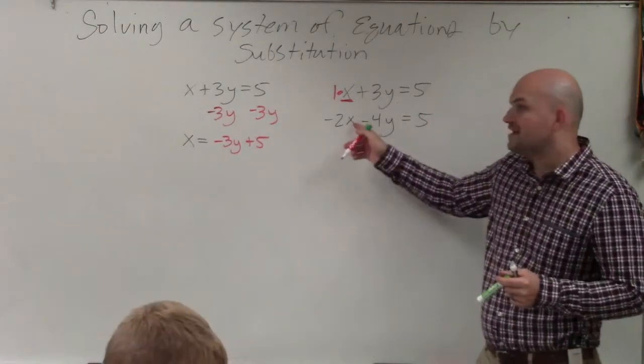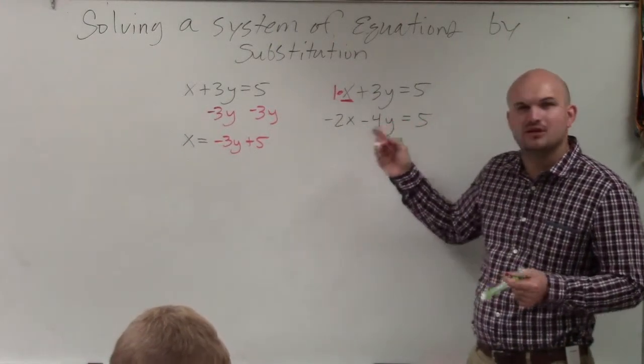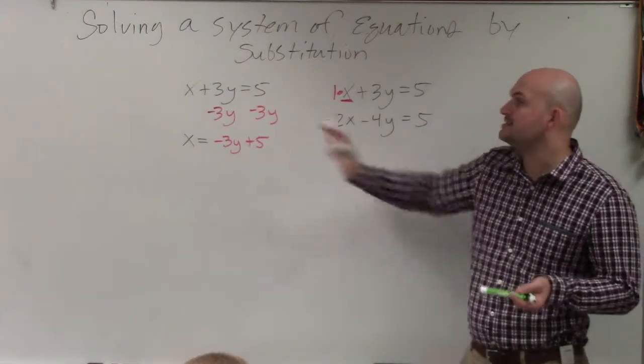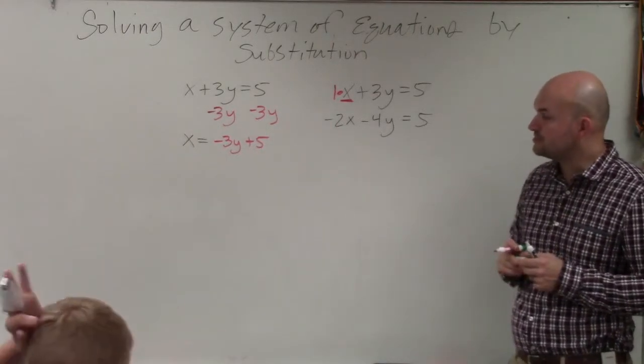OK? If you were to solve for x here, you'd have to add 4y and then divide by negative 2. You could do it, but do you guys see how that's more steps? Yes? So I always like to solve for the variable that has a coefficient of 1 or negative 1.